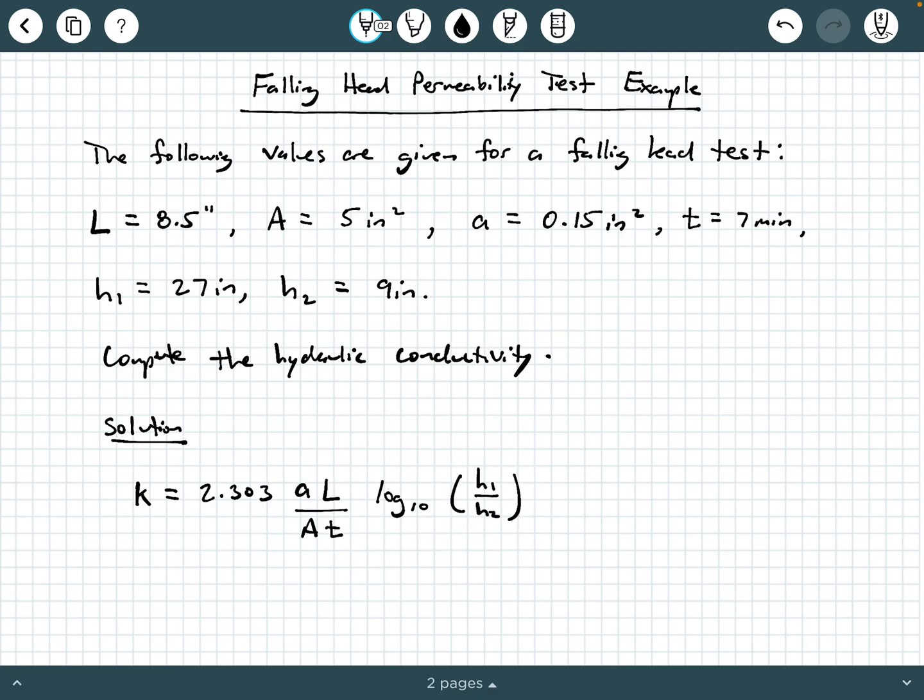Now we can substitute in all of these values accordingly. So 2.303, we were directly given little a so that's 0.15 square inches. The specimen length is 8.5 inches divided by the specimen cross-section area which is 5 square inches and then the duration was 7 minutes. If you want to, you could convert that to seconds if the question is wanting you to calculate this in units of inches per second. And then we're going to have log base 10 of 27 inches over 9 inches.